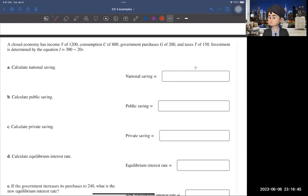Now move to the next question here. So same as the very first question, the saving, you can easily calculate now. So the national saving is Y minus C minus G. So Y is given as $1,200. And then the consumption is $800. And government purchase $200.